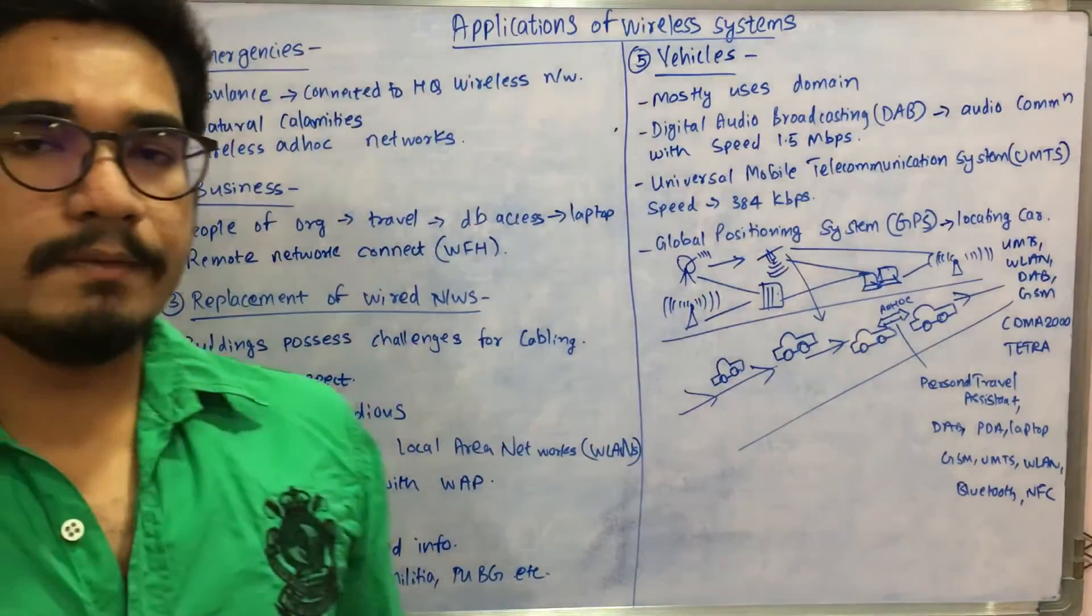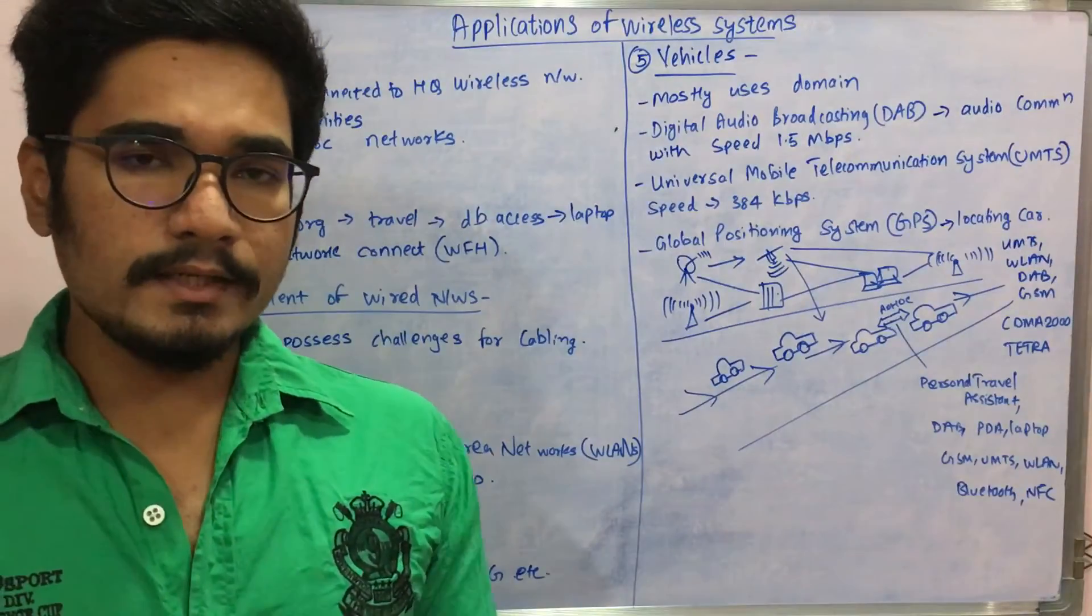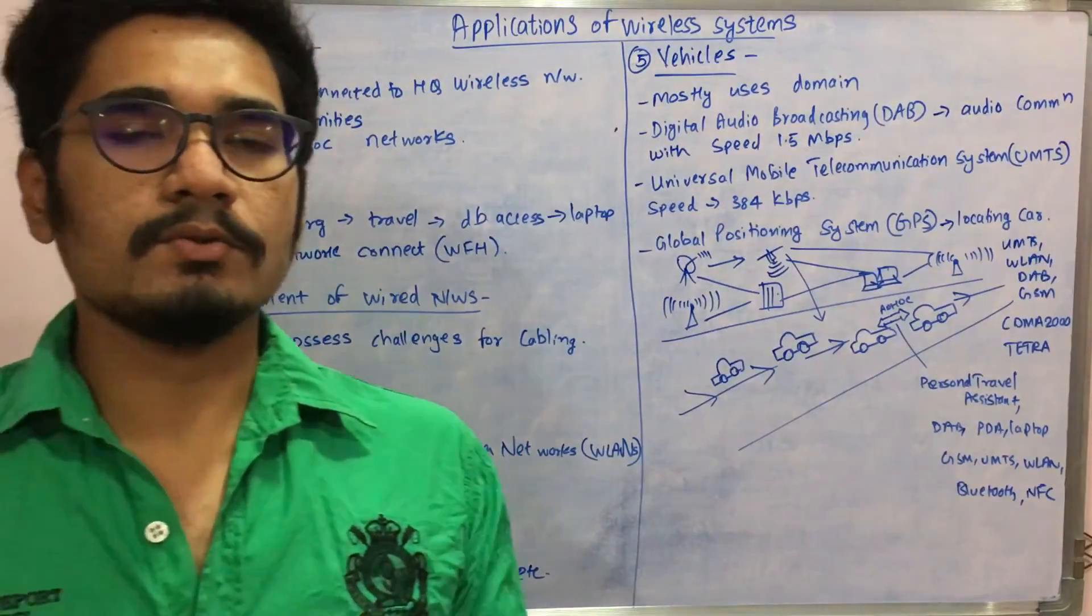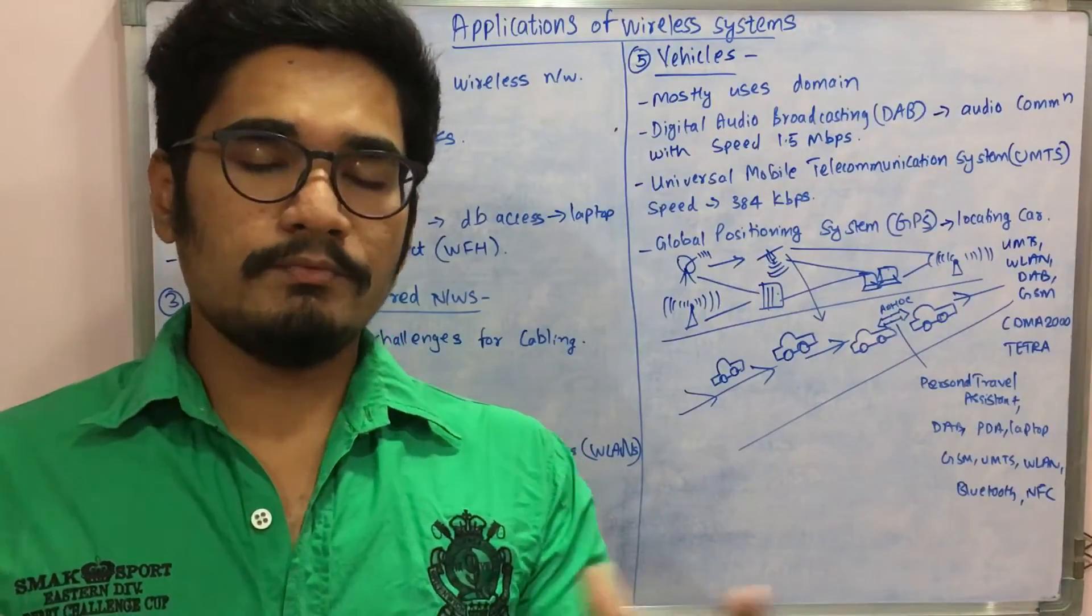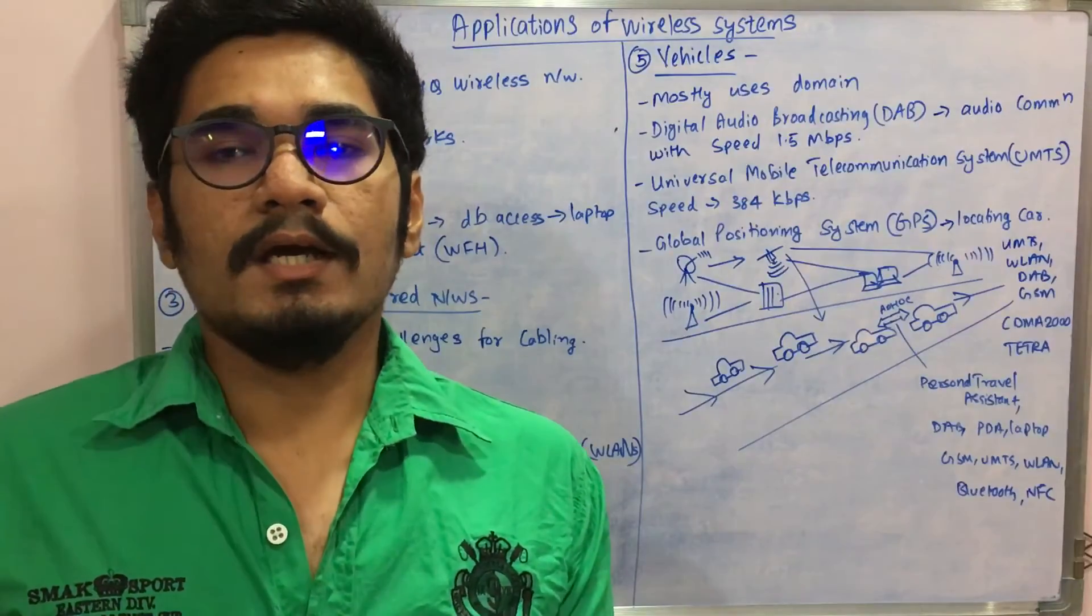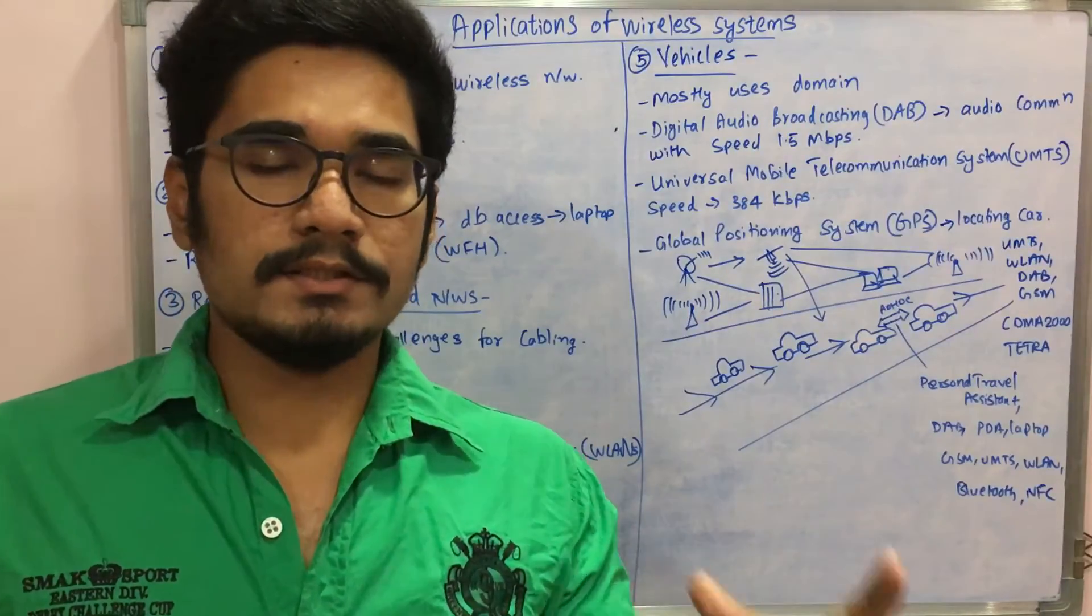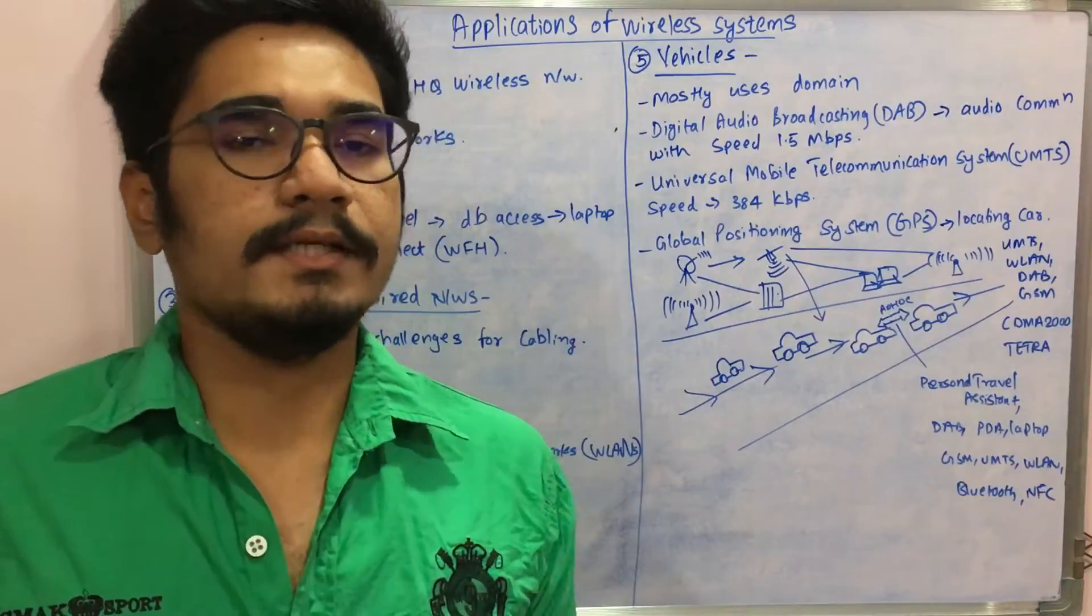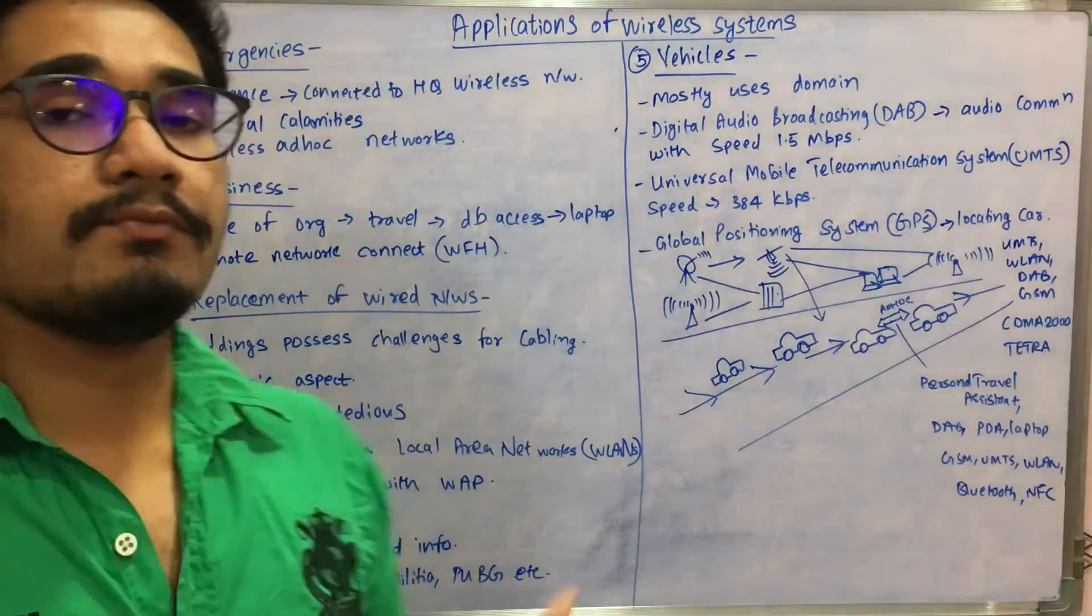Next is online games. We all play online games. If you play PUBG, Mini Militia, and so on, it's like a group of players sitting with different devices connected over the same network. If a player is online, you can just join and play the game. This all comes under the infotainment system.